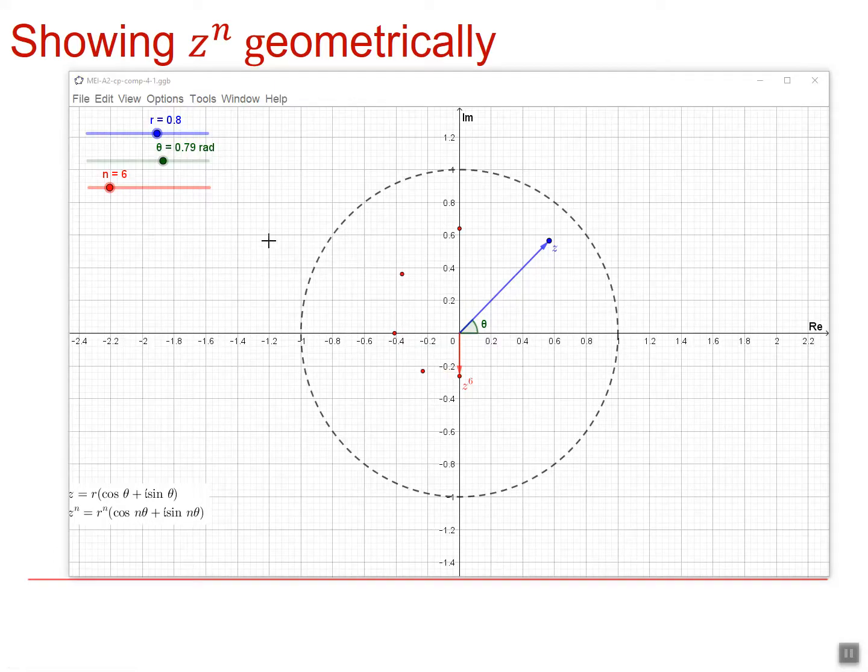Here's that dynamic plot. Notice that each power is getting smaller. In fact, what we've got is powers of 0.8 for the modulus of each successive result, so it's spiraling inwards, and it's going around by θ every time. So this powering is effectively an enlargement with, in this case, scale factor 0.8 every time, and a rotation of 0.79 radians, which is π by 4.